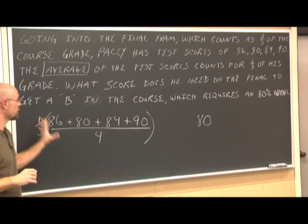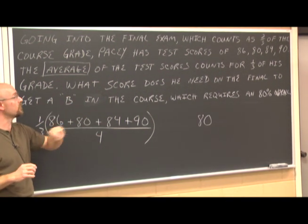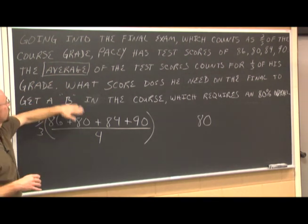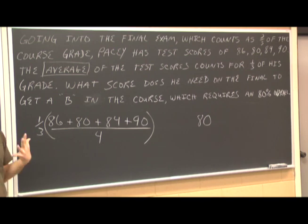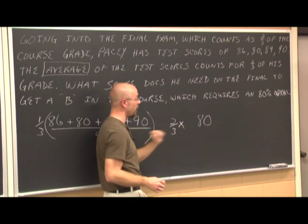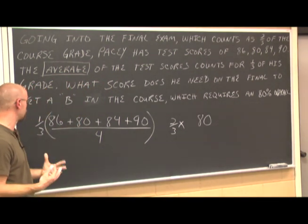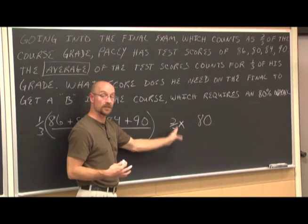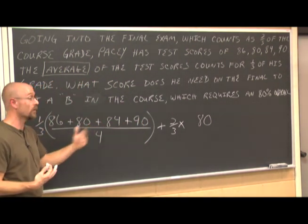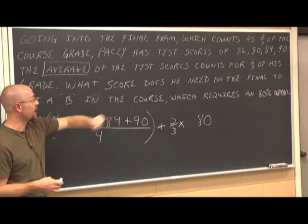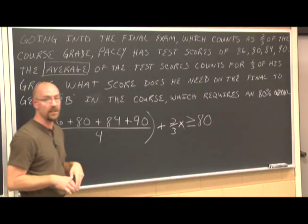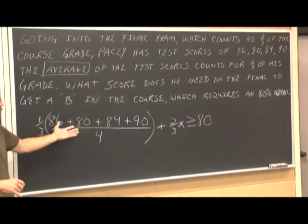The overall grade must be greater than or equal to 80. Two-thirds of the final score plus one-third of the test average must meet that threshold. The test average is the sum of the four scores divided by 4. The final exam score is my variable — what I need to find. Putting it all together: one-third times the test average plus two-thirds times the final exam score must be greater than or equal to 80. I've now built my equation and I'm ready to solve it.